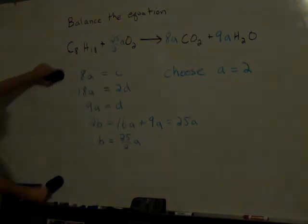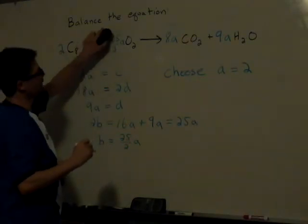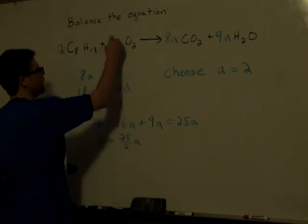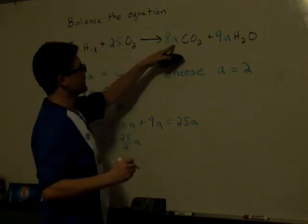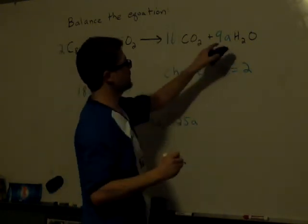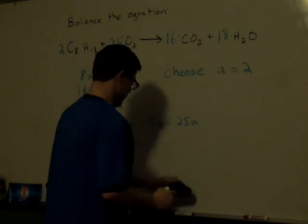So I choose A to be equal to 2. That means there's a 2 there. 25 halves times 2 is 25, so there's a 25 there. 8 times 2 is 16, so there's a 16 there. And 9 times 2 is 18, so there's an 18 there. And there you have it.